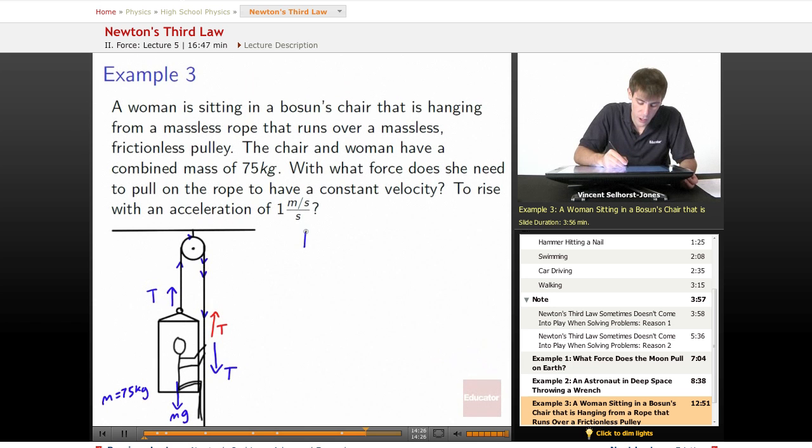If she wants to have a constant velocity, we need the sum of the forces equals mass times acceleration. If we want constant velocity, then that's going to be equal to zero. The sum of the forces is 2T going up, and we'll make up the positive direction. So 2T minus Mg. If it's no change in velocity, constant velocity, no acceleration, this all equals zero.